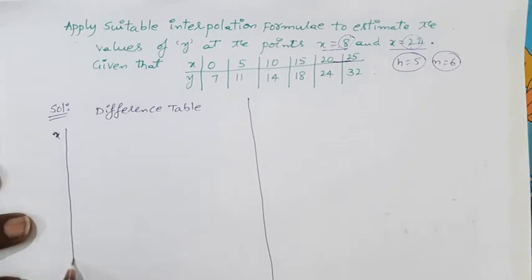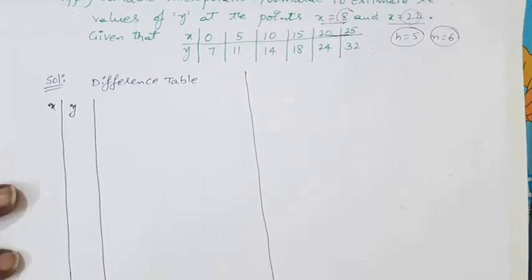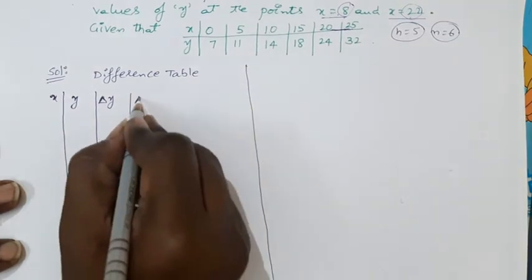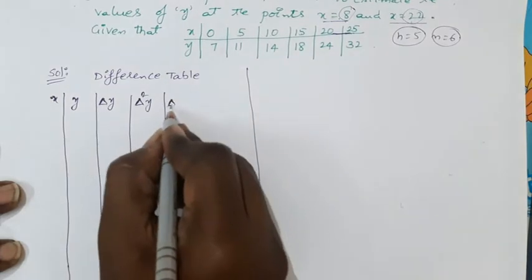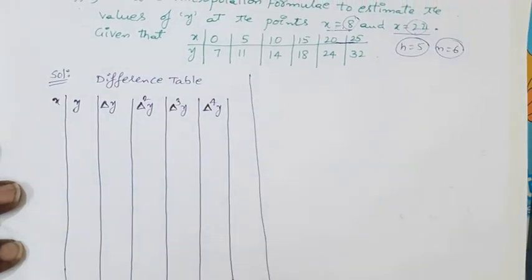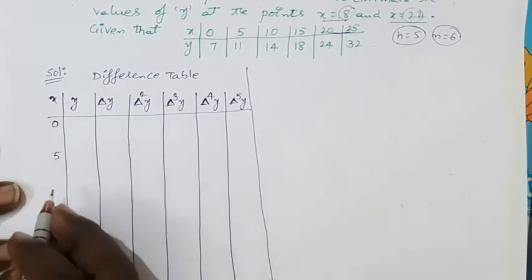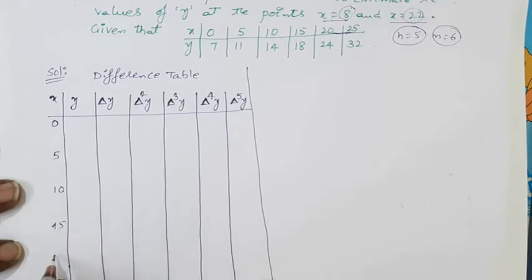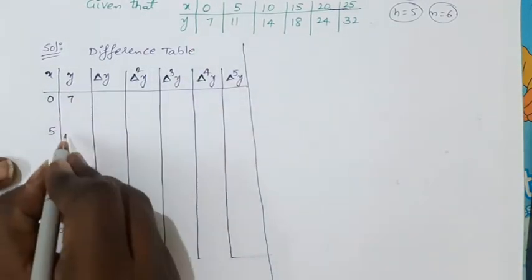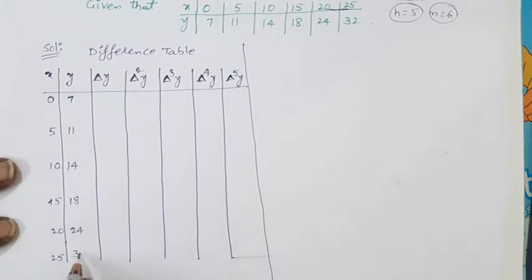Write the x values in the first column and y values in the second column. Then write columns for Δy, Δ²y, Δ³y, Δ⁴y, and Δ⁵y. The x values are 0, 5, 10, 15, 20, 25, and the corresponding y values are 7, 11, 14, 18, 24, 32.